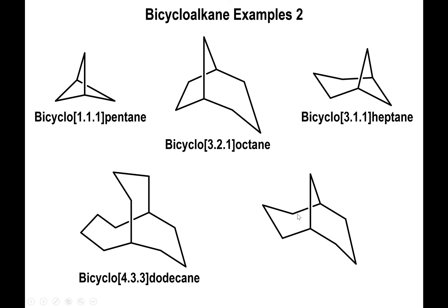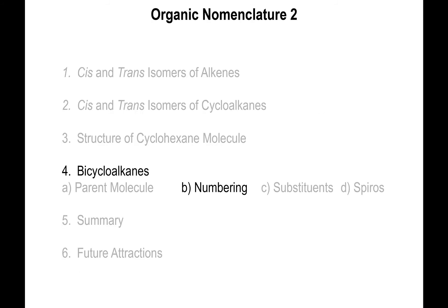For the last example in the series, we have three carbons to the left, three carbons to the right, and one carbon on top, so this is bicyclo[3.3.1]. Adding those values gives seven, plus two more gives nine: this is bicyclononane. As you can see, naming the bicycloalkanes is not too difficult on its own.